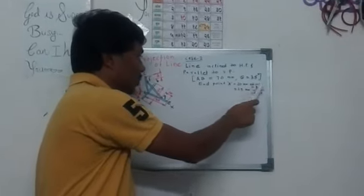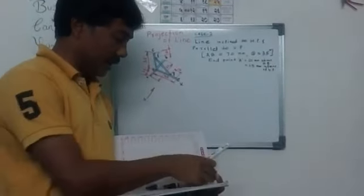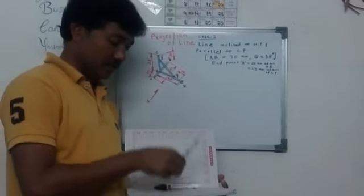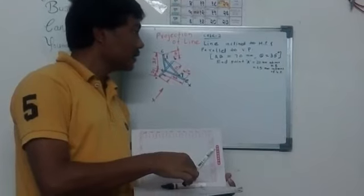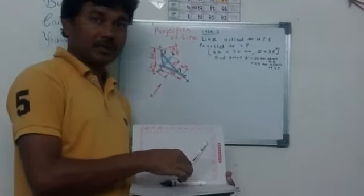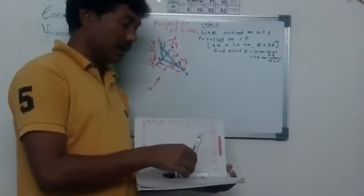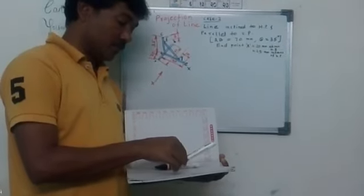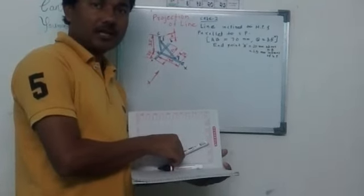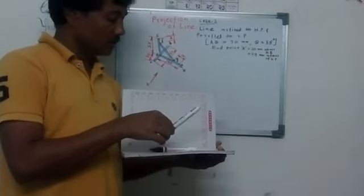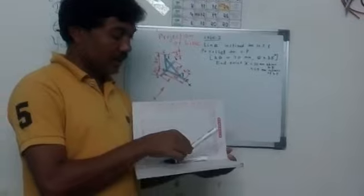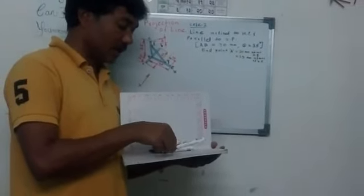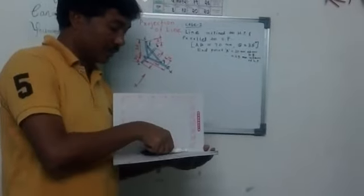End point A is 20 millimeters above HP and 25 millimeters in front of VP. The line AB is 70 millimeters long. It is not parallel and not perpendicular to HP, but inclined to HP at 35 degrees and parallel to the vertical plane. When looking from the front, you will get the inclined front view. Since the line is parallel to VP, in the top view you will get two points, and the top view will be parallel to the AXY line.